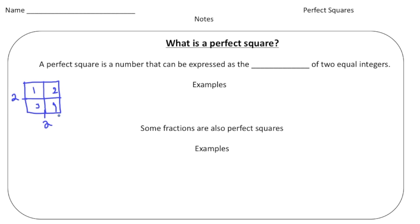We know to find the area of the square we do length times width, giving us four. We could draw four squares out of the larger square: one, two, three, and four. So four is actually our first example of a perfect square, where a perfect square is a number that can be expressed as the product of two equal integers. So would you please write 'product' right here.